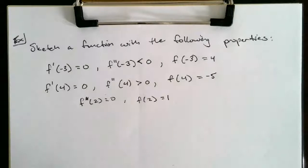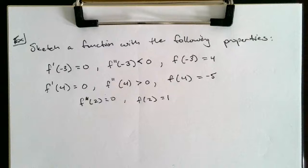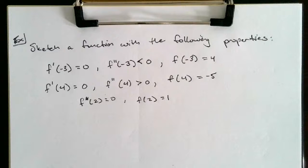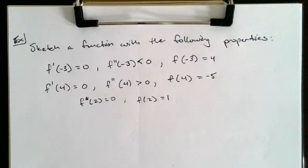This is a video on using the first and second derivative to sketch functions. They're giving us an example where they're asking us to sketch a function with the following properties: f'(-3)=0, f''(-3)<0, f(-3)=4, f'(4)=0, f''(4)>0, f(4)=-5, f''(2)=0, and f(2)=1.